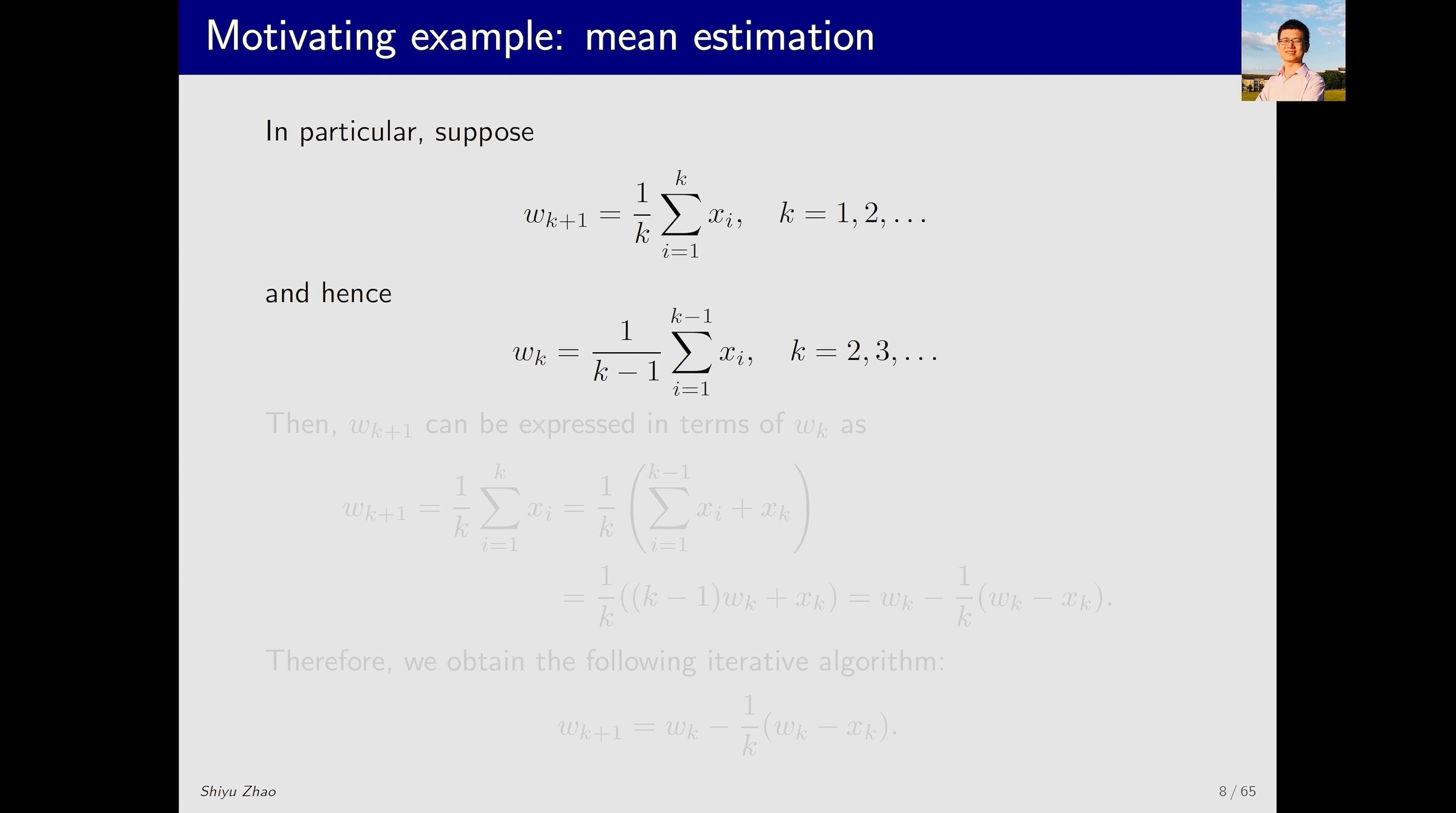Given the definition of w_{k+1}, what does w_k look like? It's very simple. It is the average of the first k minus 1 x_i values. What do we need to do next? We need to establish the relationship between w_{k+1} and w_k. In fact, w_{k+1} can be expressed in terms of w_k.